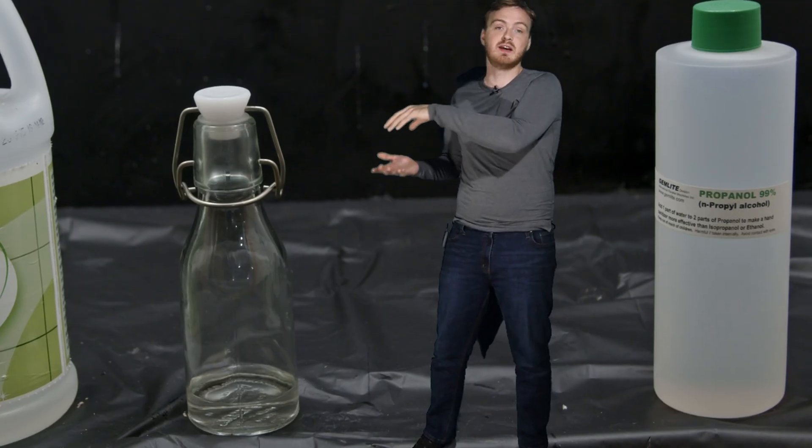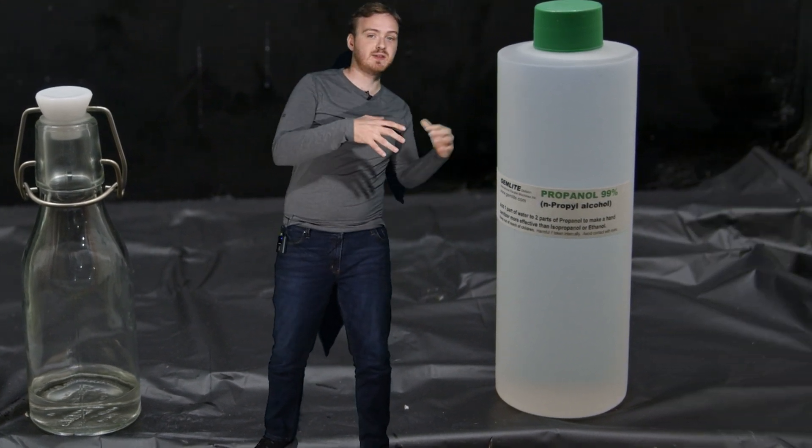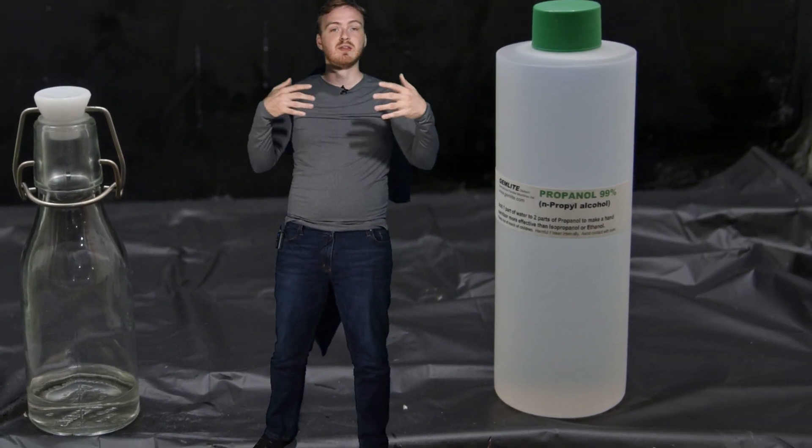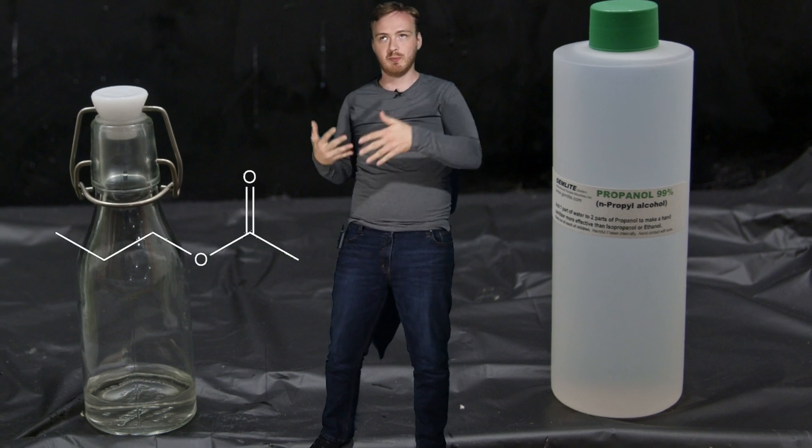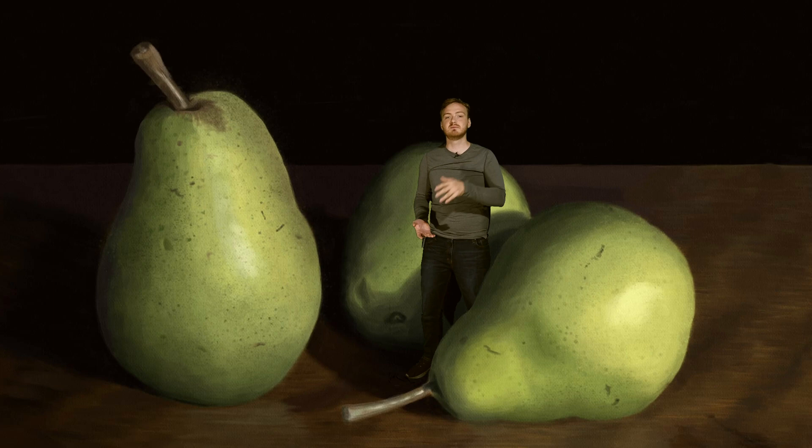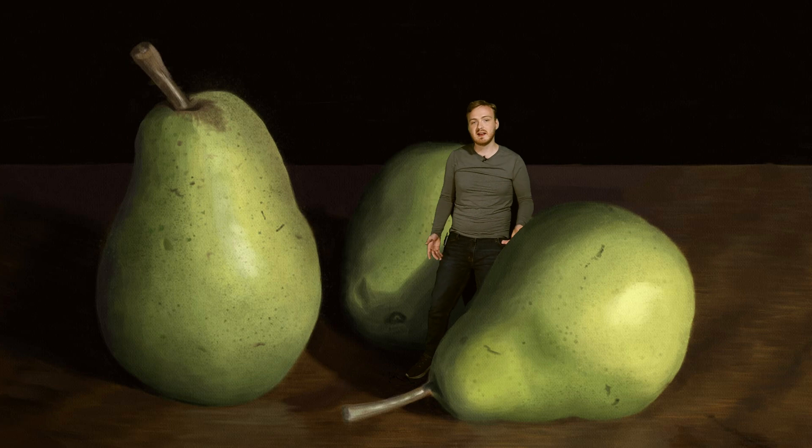Today we're going to be taking that acid, combining it with this alcohol over here, and they're going to sort of weld together to make this new chemical called propyl ethanoate. Now this stuff is supposed to smell like pears. It's used as a food additive, so I've probably had it before, but I've never had it in its pure form, so we're going to see what that looks like today.